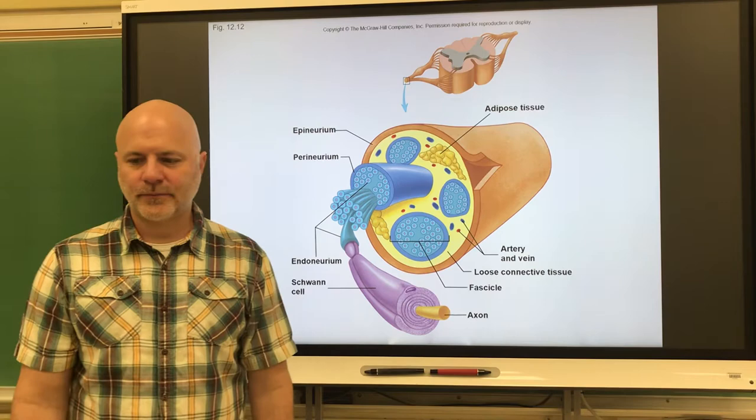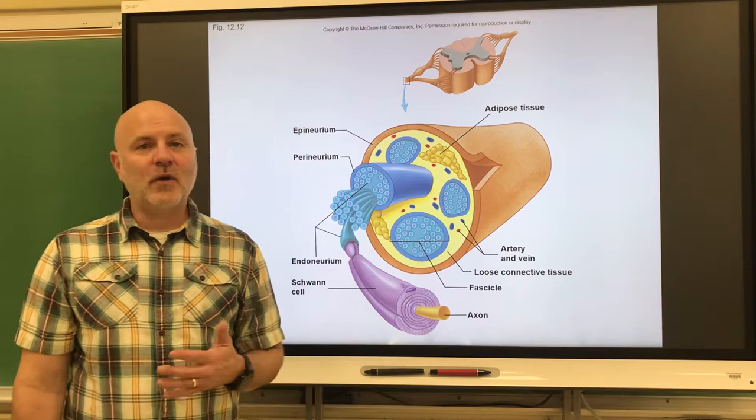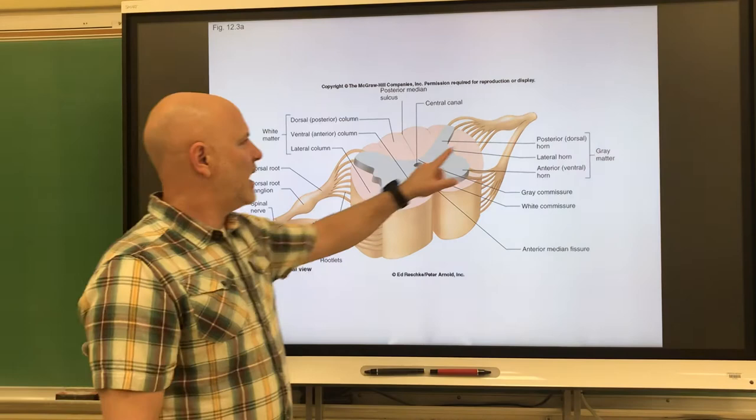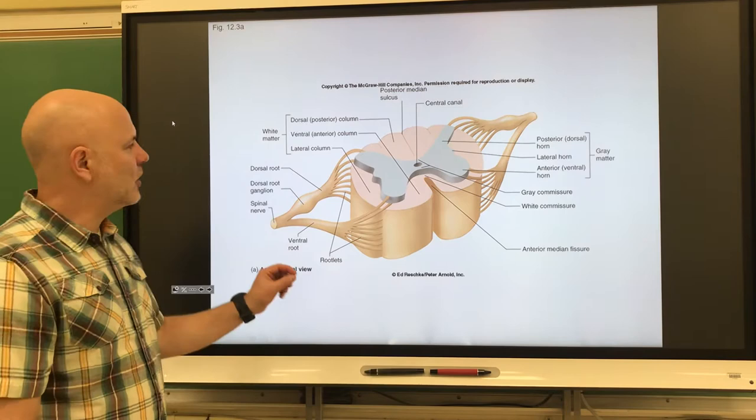Spinal nerves are nerves that arise from the spinal cord, and we have 31 pairs of these. This diagram shows one segment of the spinal cord where we have a pair of spinal nerves coming out of it. Each nerve has two branches.